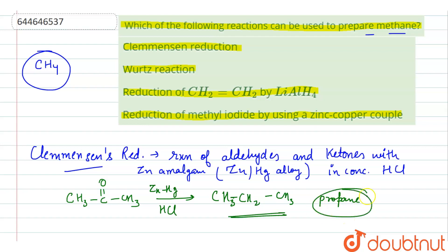We can see the simplest ketone is basically giving a three-membered chain, that is propane, and methane is only having one carbon atom. So this cannot be prepared with Clemmensen reduction. Next is Wurtz reaction.